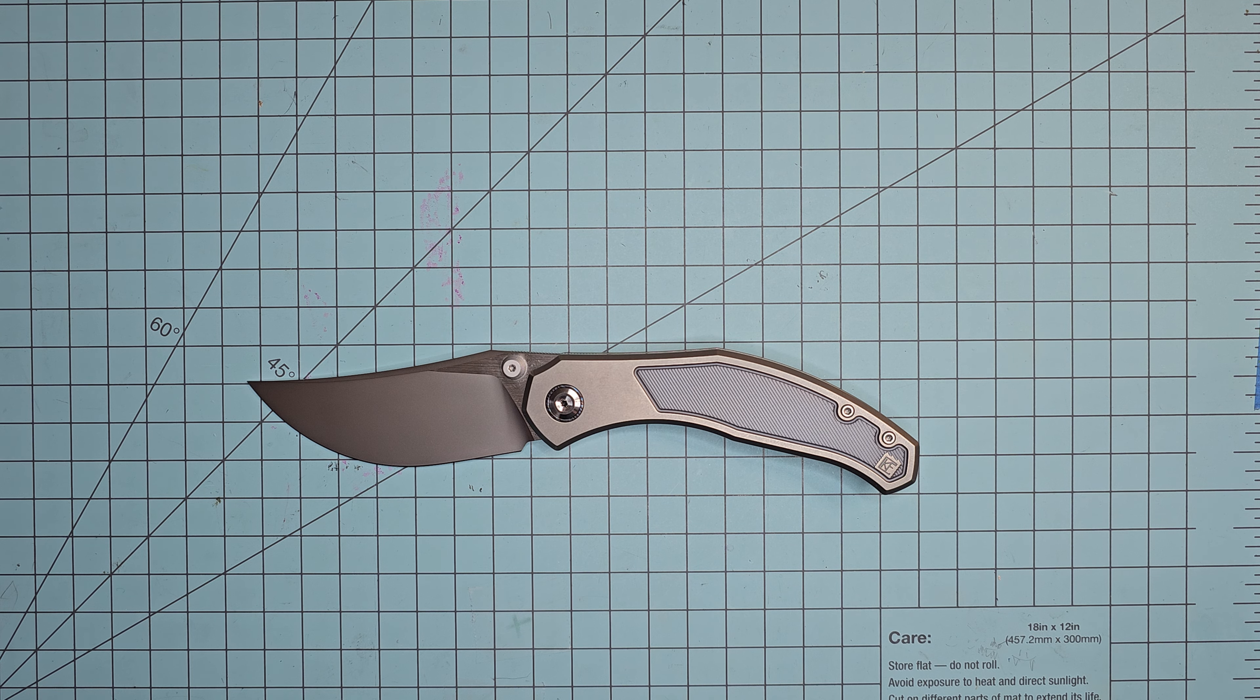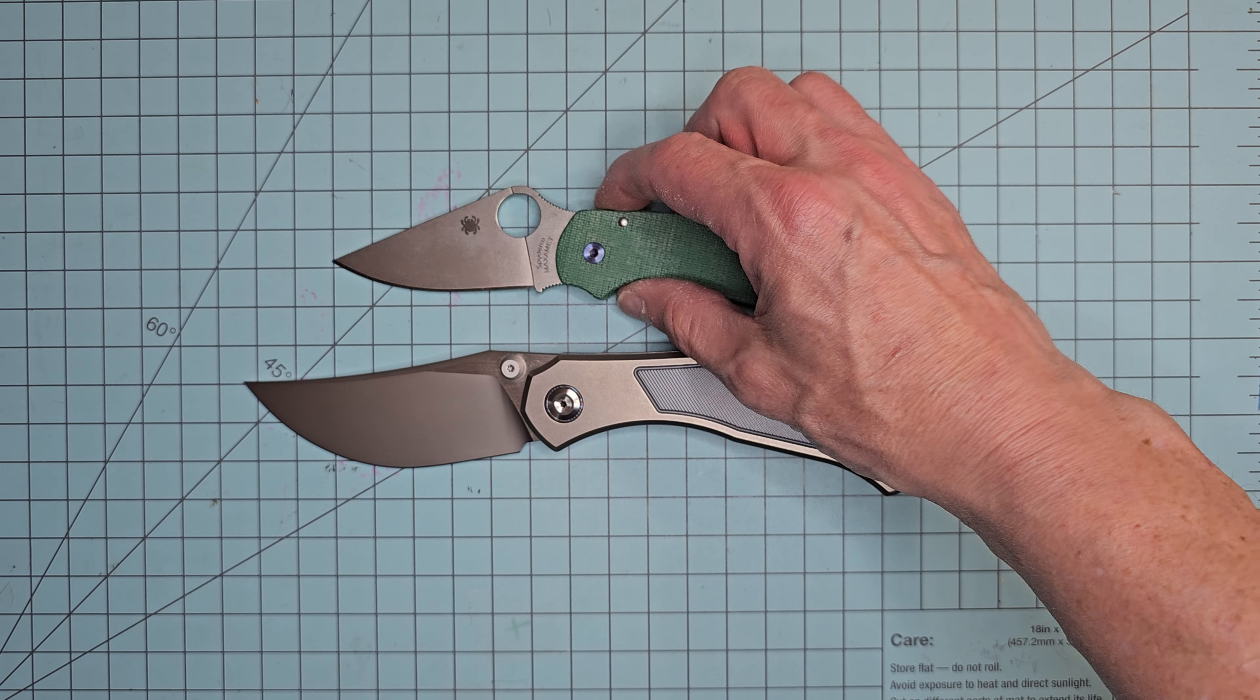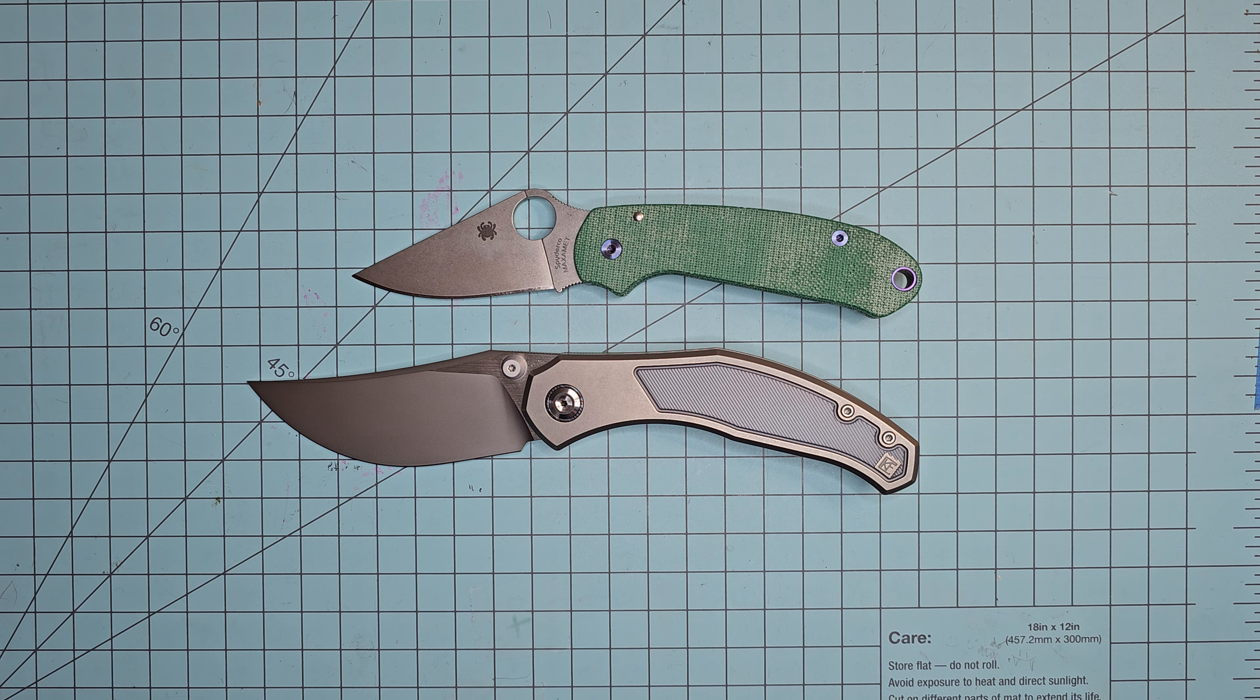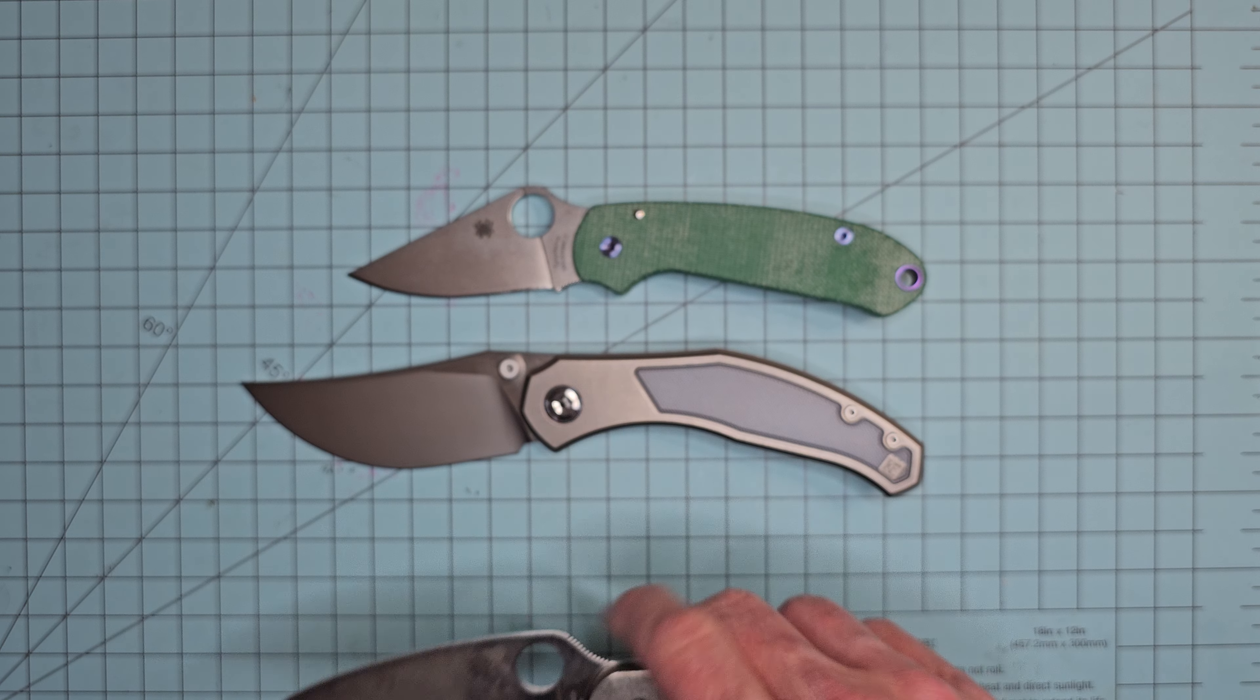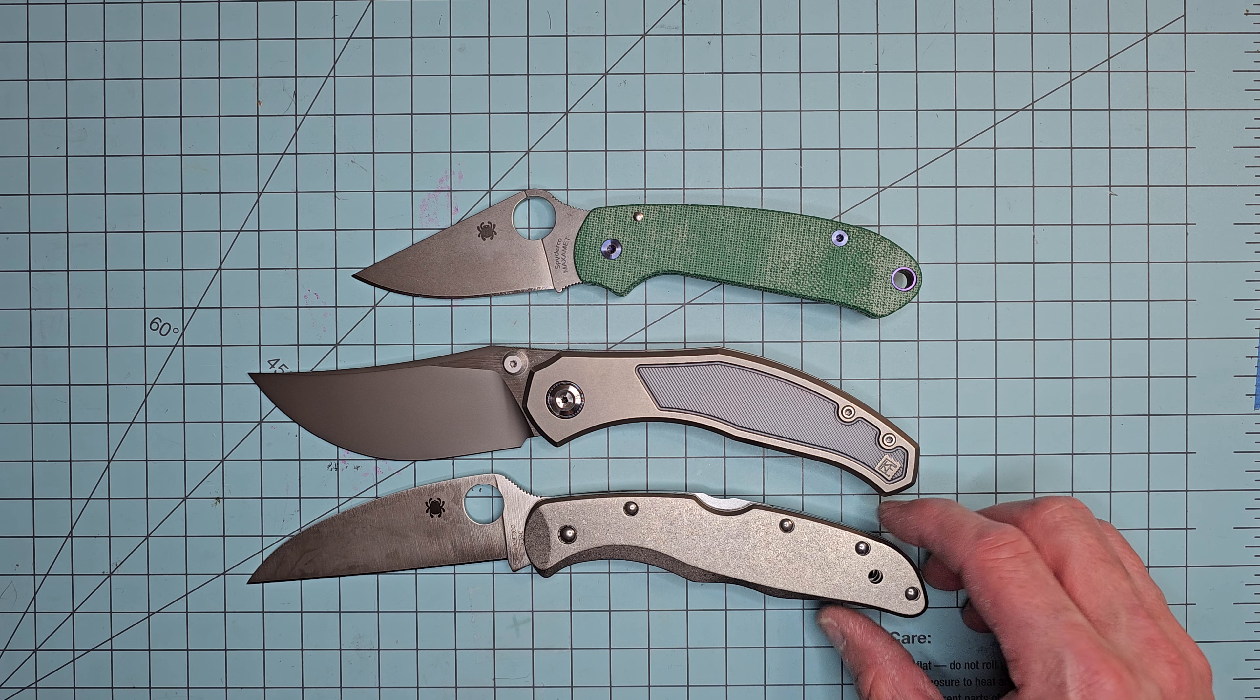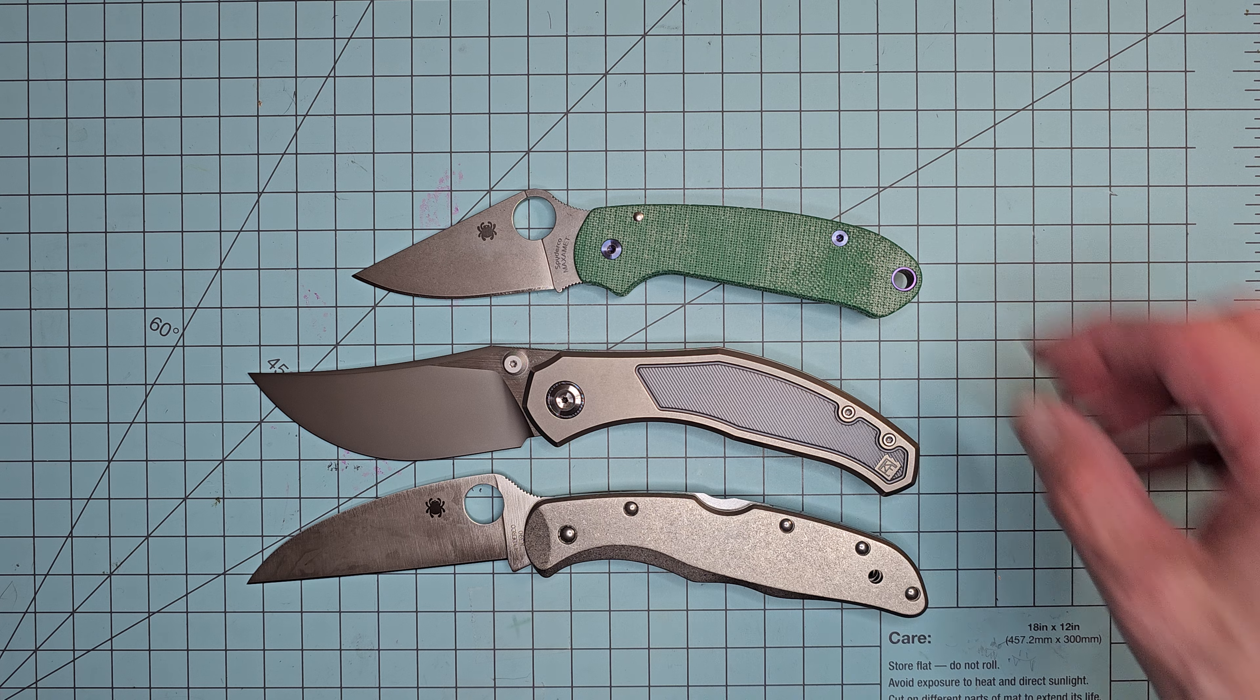We'll do some quick size comparisons. There it is against the Spyderco Para 3. And here's another Spyderco Endura. This is the Endura Wharncliffe. So it's about the same size as the Endura Wharncliffe.